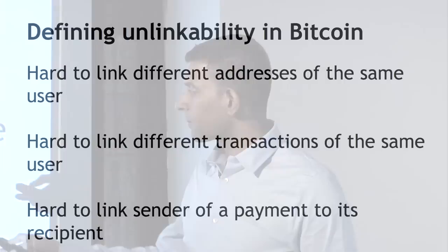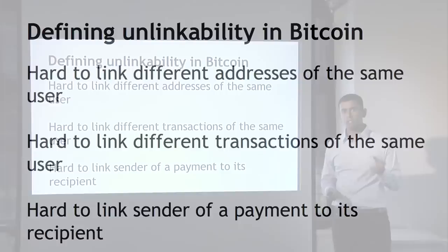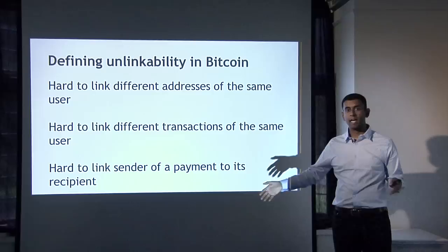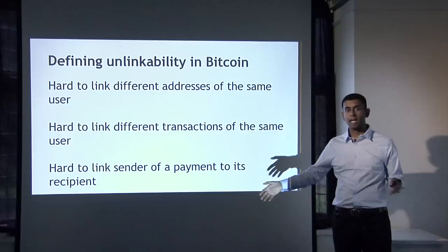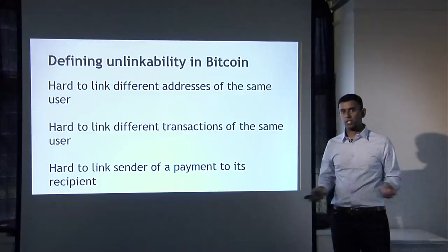Even with an indirect payment route, somebody looking at the blockchain can still infer that bitcoins left some address and appeared at another address in roughly equal amounts and within a similar time period. So unlinkability can't be achieved among all possible transactions, but only among a smaller subset of transactions that look like each other.